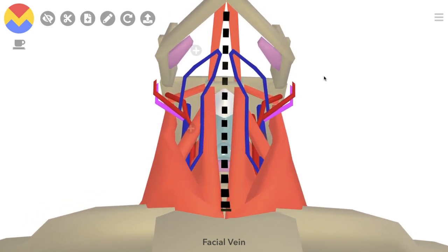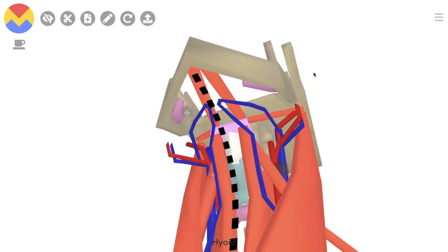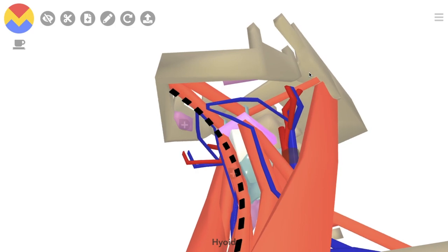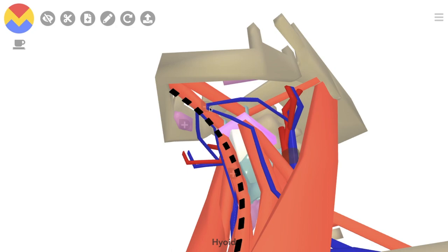The submental triangle is the only unpaired triangle of the neck. Its boundaries are the anterior bellies of the digastric muscles and the hyoid bone. If you've ever seen somebody stroke their goatee, they're pretty much stroking the submental triangle. It contains the submental lymph nodes and part of the anterior jugular vein.